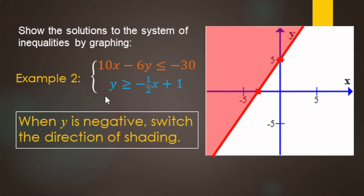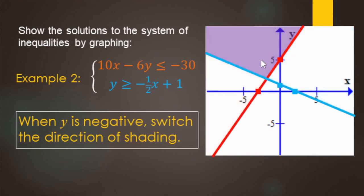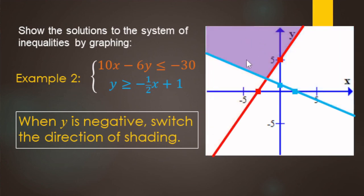For the other inequality in slope-intercept form, start at y-intercept one, then apply the slope: down one, right two, giving a second point. It's 'or equal to' so it gets a solid boundary line, and for greater than we shade above. The region showing all ordered pairs that make both inequalities true is where the blue and red overlap — that area right up there.